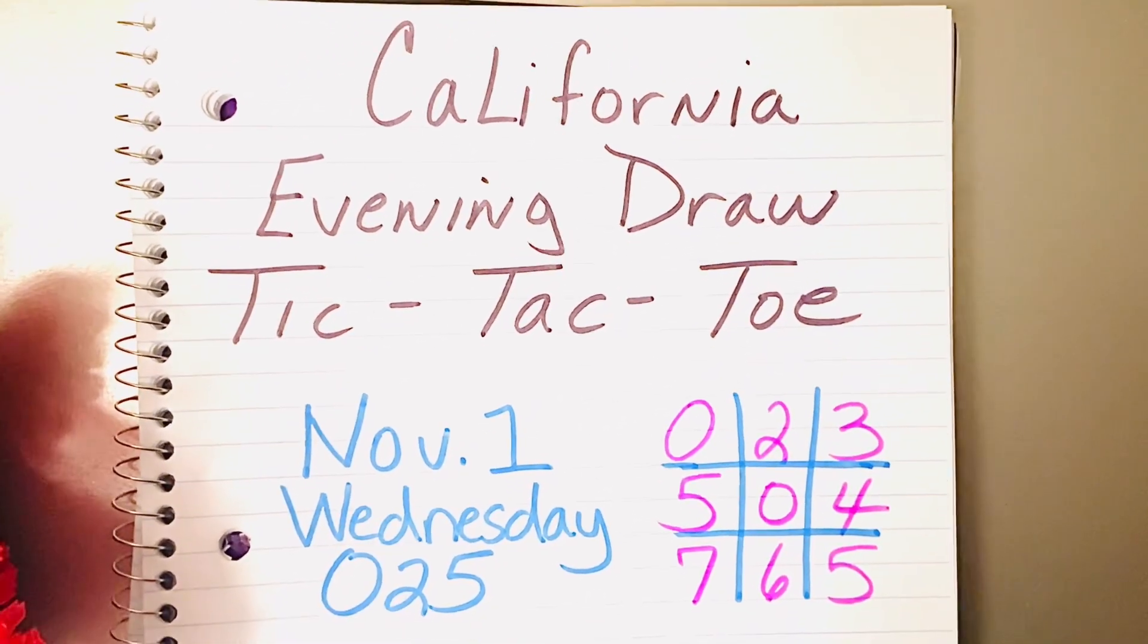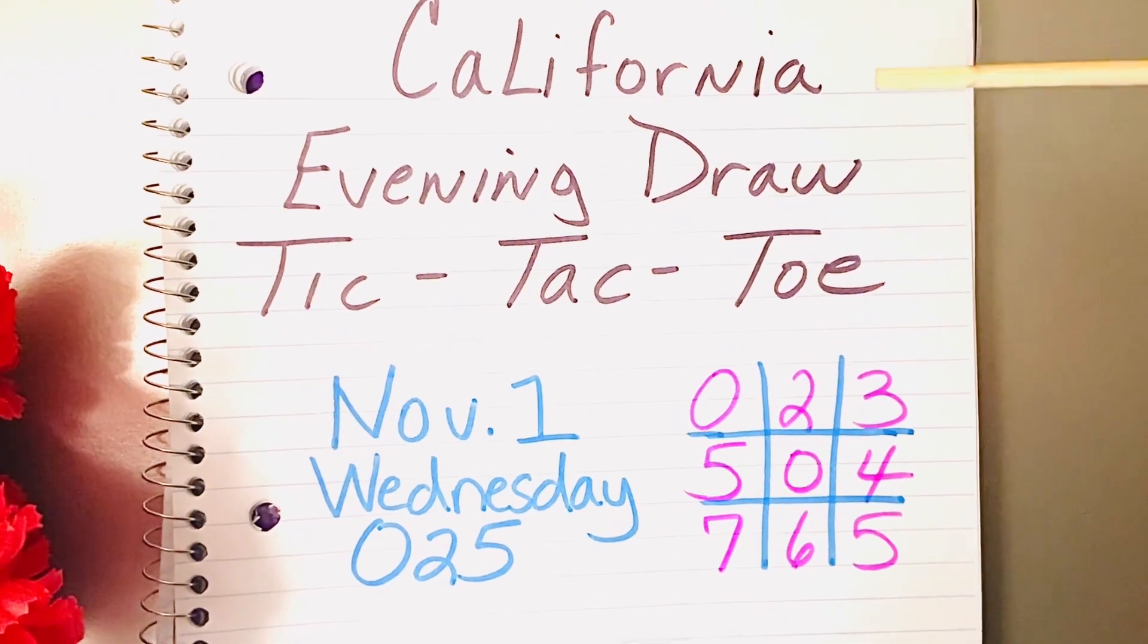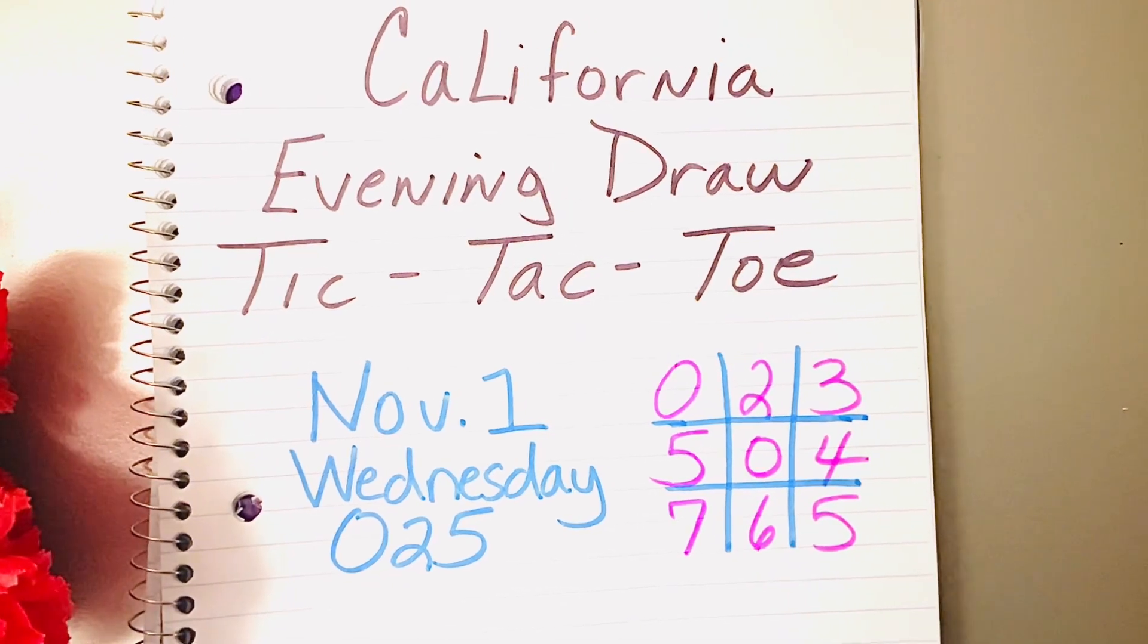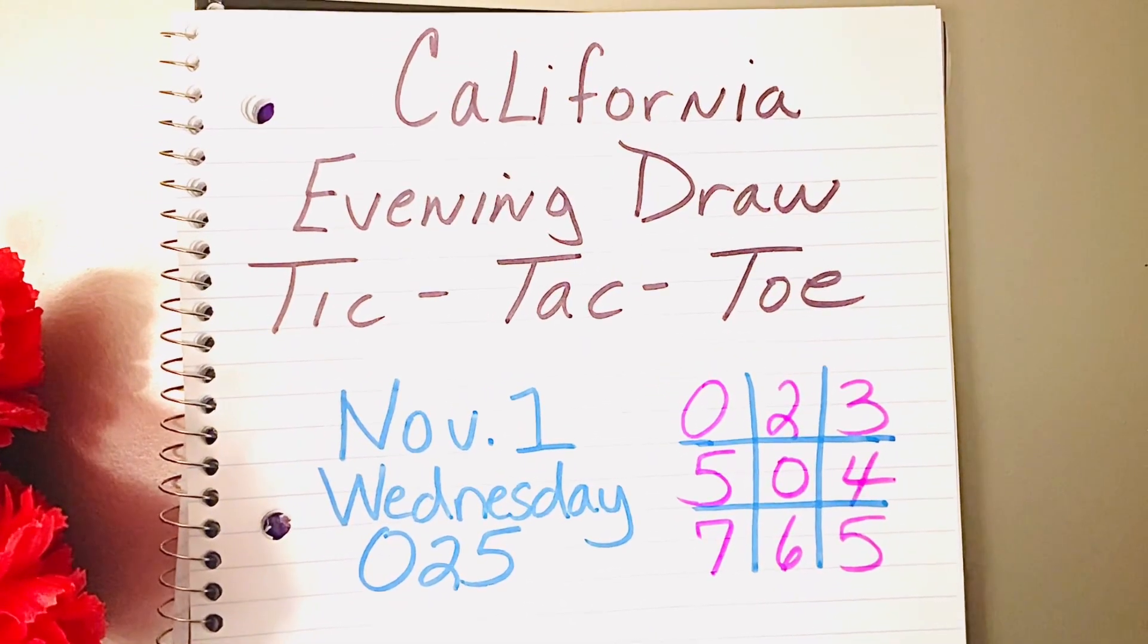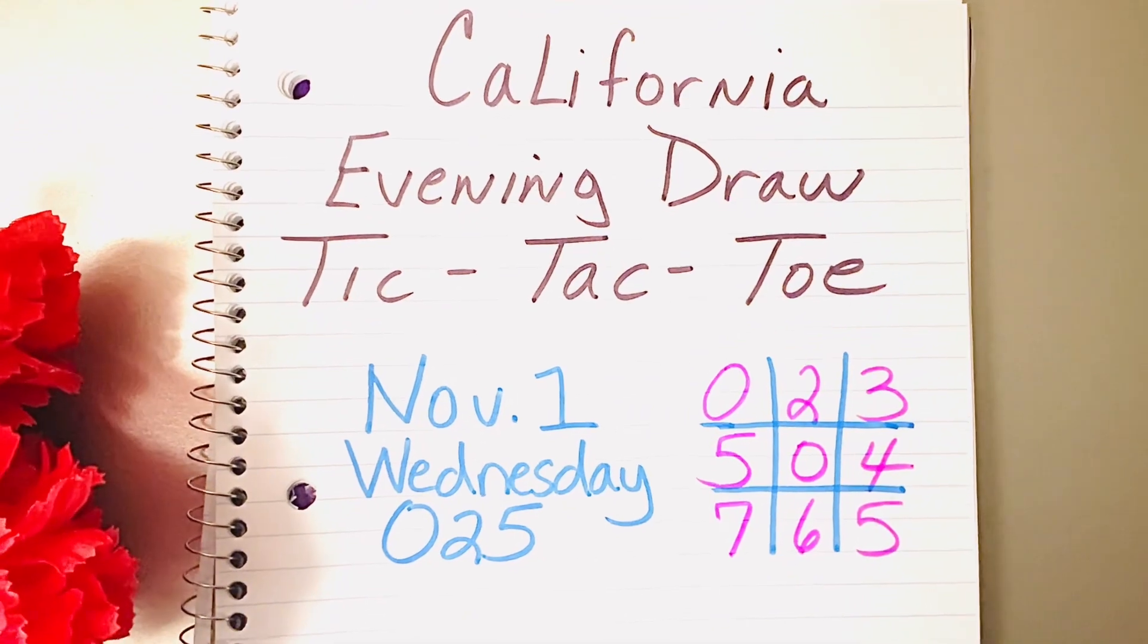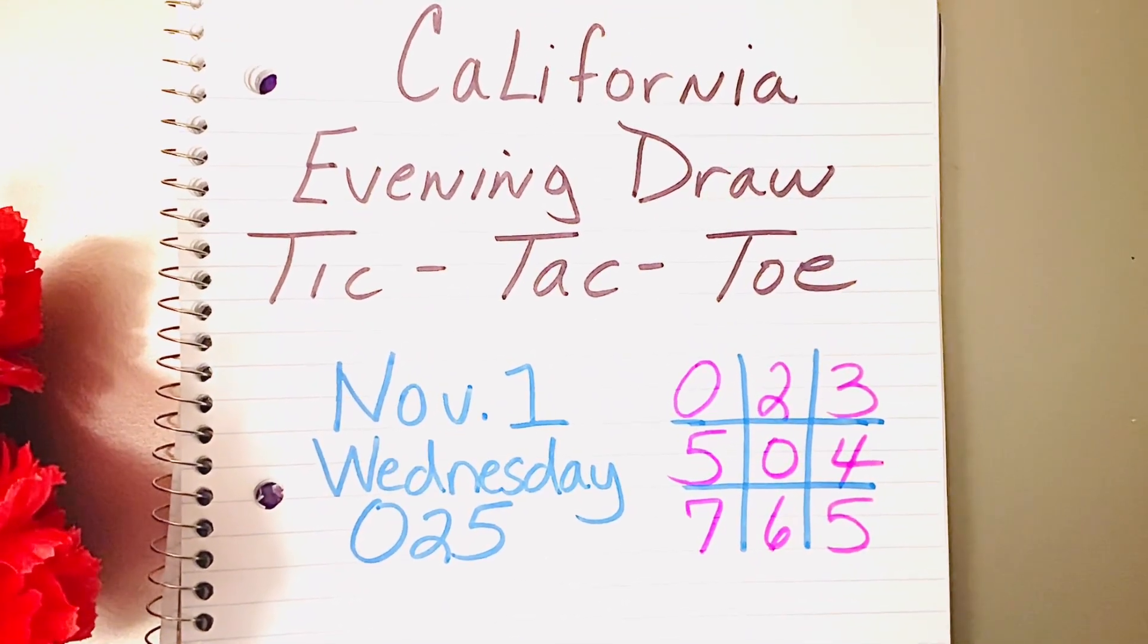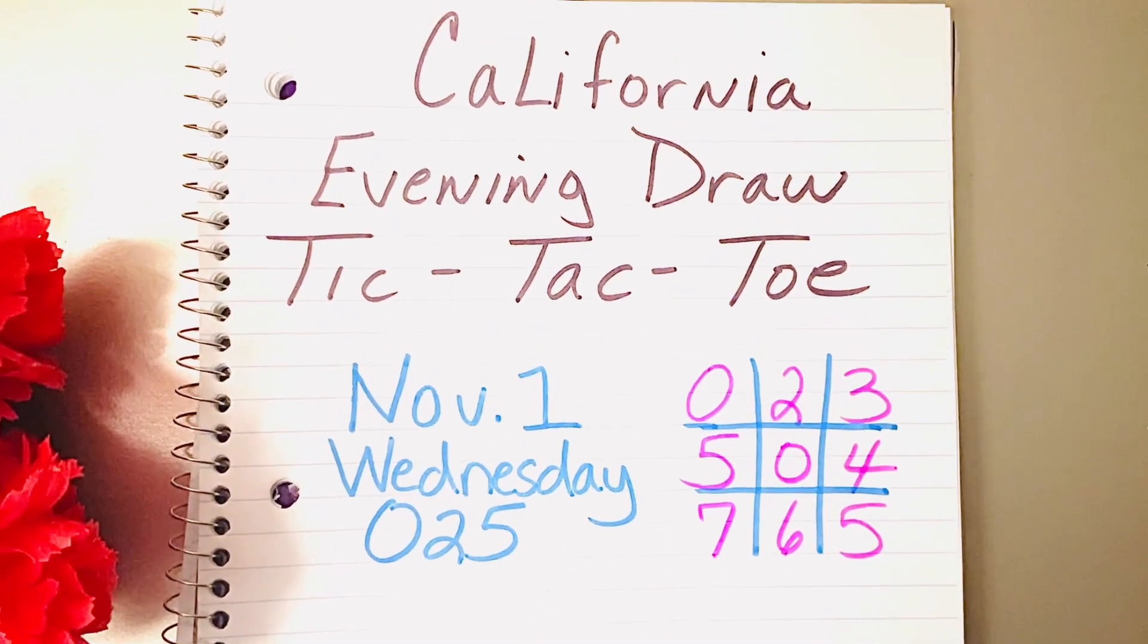Now for those of you that have watched my first video, I want to share the update from the results of yesterday's Evening Draw winning number. So for my first video, I don't believe that I made clear what I was trying to accomplish here. Basically, I'm trying to use the tic-tac-toe grid and predict the next day's number, but I do not want to have to use any flip numbers or mirror numbers.